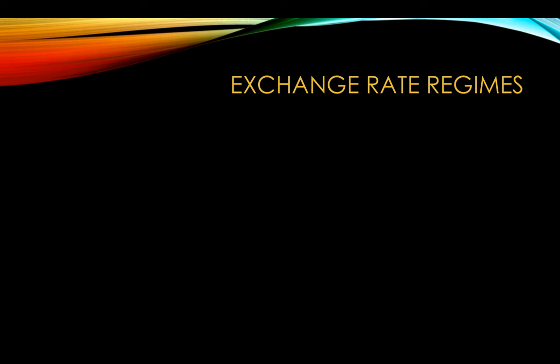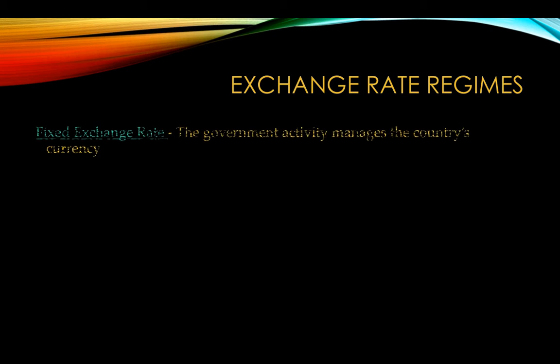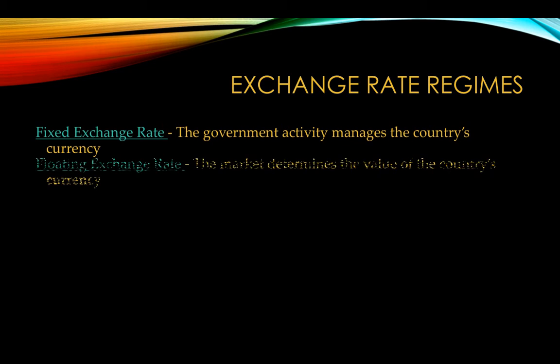There are a couple of different ways of determining exchange rates. The first is a fixed exchange rate, where the government can manipulate their exchange rate and keep it at a certain level — if the rate gets too high, they can sell or buy more of their currency to keep it fixed. What we've just been talking about is a floating exchange rate, which is determined by the fluctuations of supply and demand.